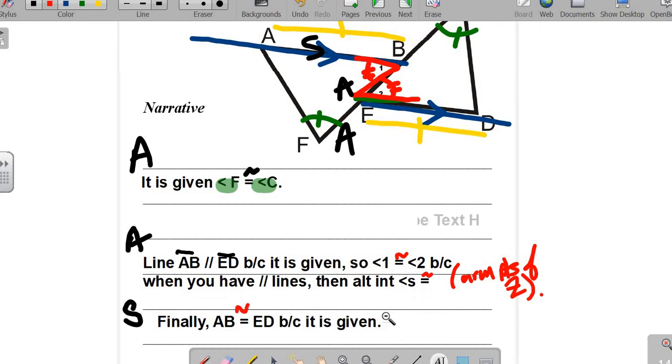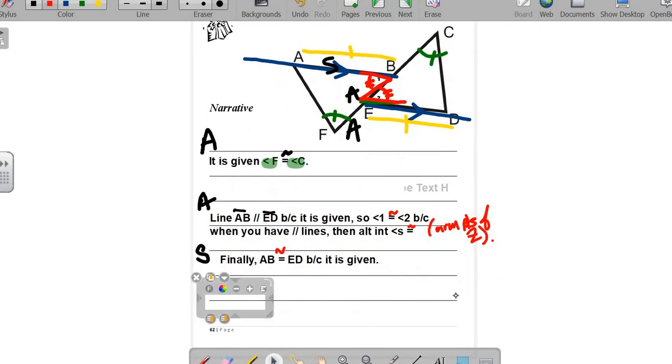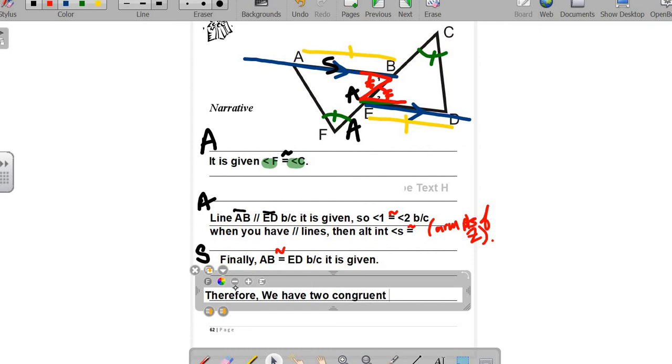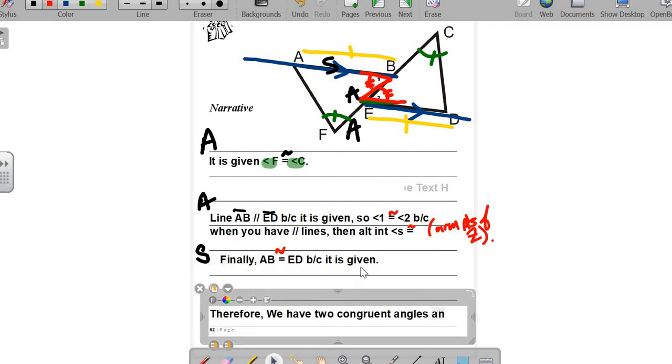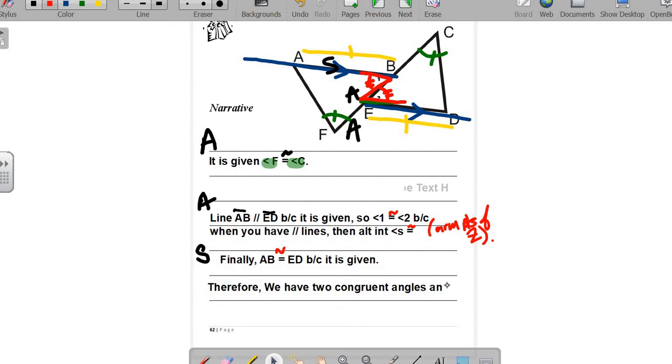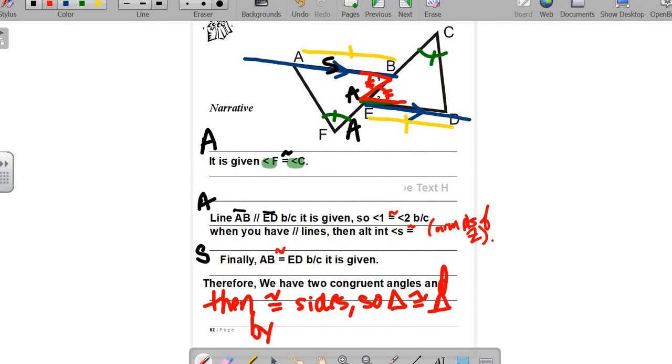AB is congruent to ED because it is given. That gets us a pair of sides. And then you need a summary statement that pulls the whole thing together. Therefore we have two congruent angles and then congruent sides, so the triangles are congruent by angle-angle-side.